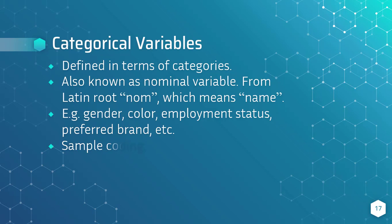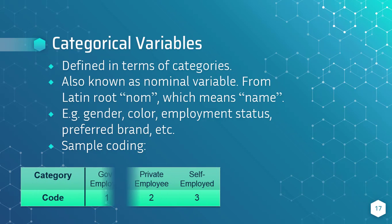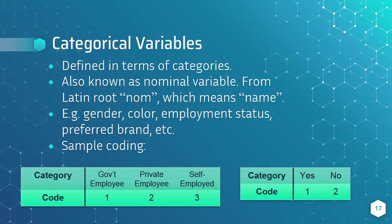However, since quantitative research needs numbers for statistical treatment, these categories are given corresponding numerical values. For example, one for government employee, two for private employee, and three for self-employed. Another example: an answer of yes can be tallied as one, and an answer of no can be tallied as two. This way, we can apply statistical treatment and describe the results based on the coding.